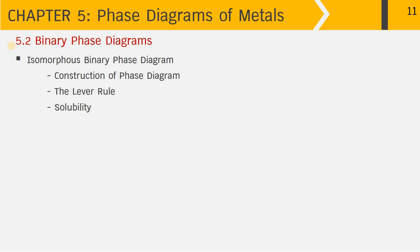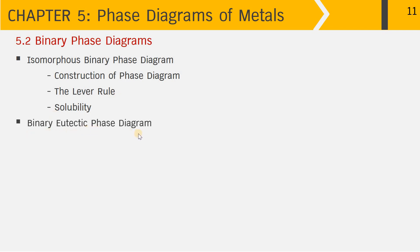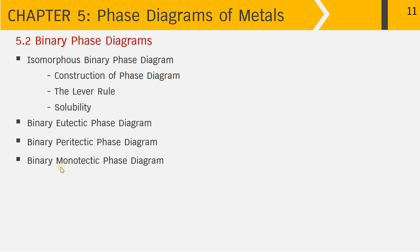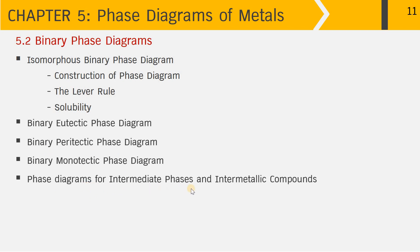Topic 5.2: Binary phase diagrams. In this topic, I will first introduce the isomorphous binary phase diagram, the construction of the phase diagram, the calculation of phase and composition based on the lever rule, and the solubility. This is followed by the binary eutectic phase diagram, then the peritectic and the monotectic phase diagram, and finally the phase diagrams for intermetallic phases and compounds. Now let's get familiar with the isomorphous binary phase diagram.